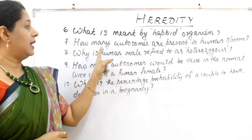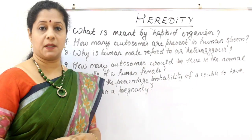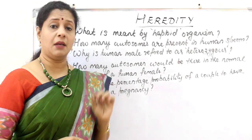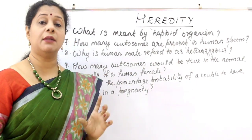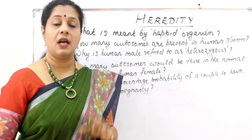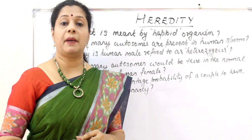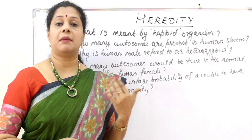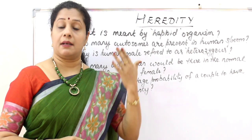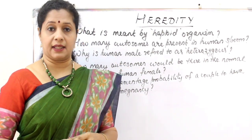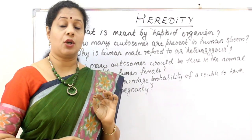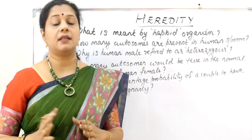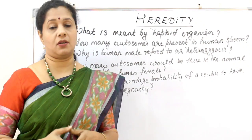How many autosomes are present in human sperm? In our cells there are 23 pairs of chromosomes — 22 pairs are autosomes present in both male and female. The last chromosome, the 23rd, is the sex chromosome, which controls sexual characters.